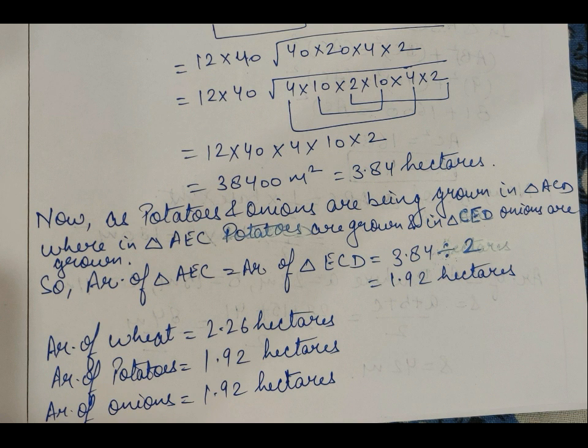Potatoes and onions are grown in triangle ACD — potatoes in triangle AEC and onions in triangle CED. Both are grown equally in both triangles. So area of triangle AEC equals area of triangle ECD, which is 3.84 divided by 2, giving 1.92 hectares each. Finally: area for wheat is 2.26 hectares, area for potatoes is 1.92 hectares, and area for onions is 1.92 hectares.